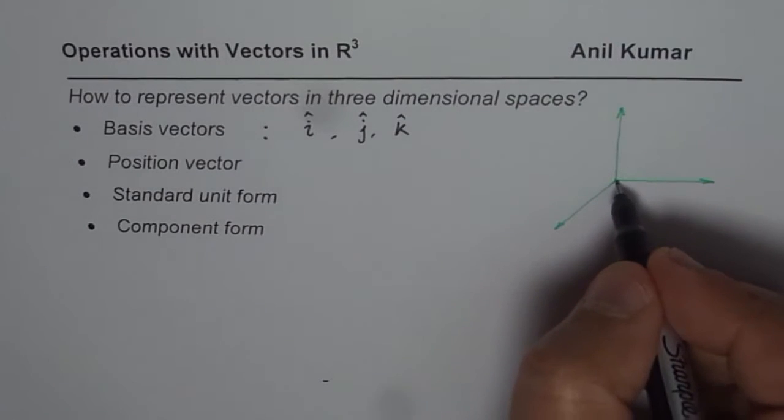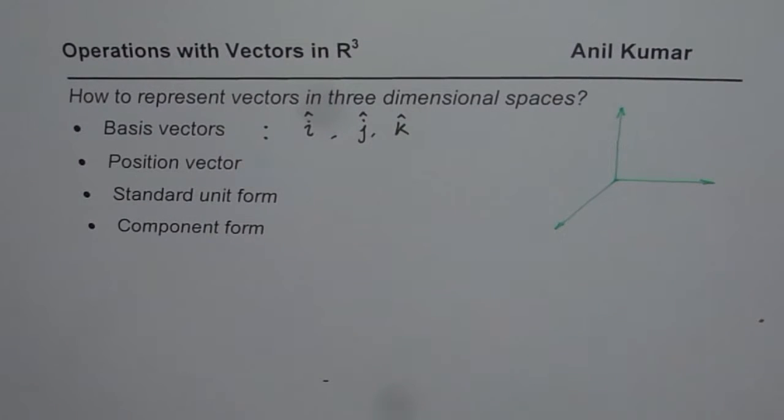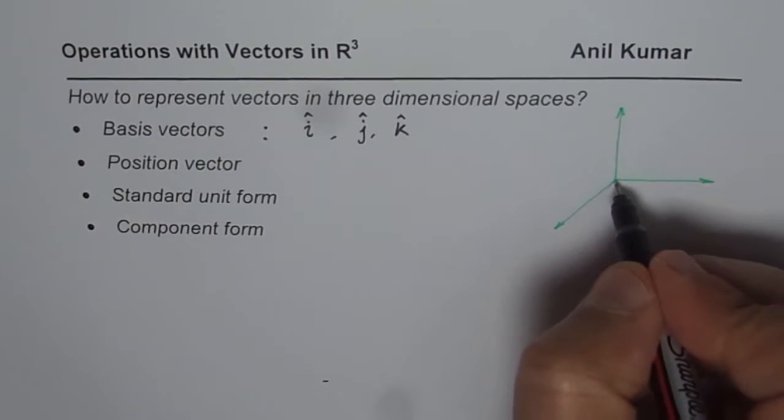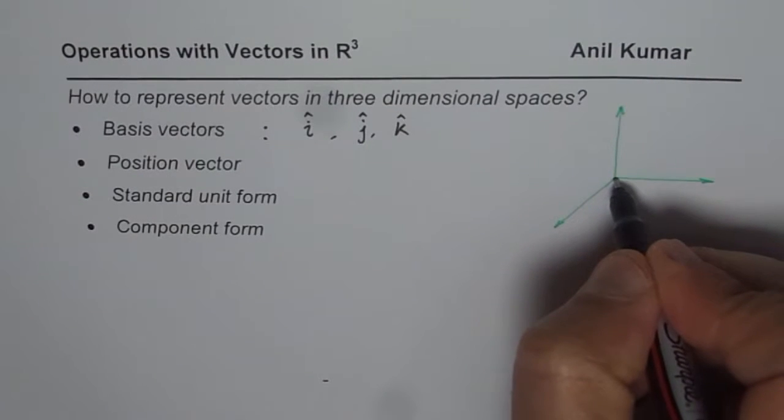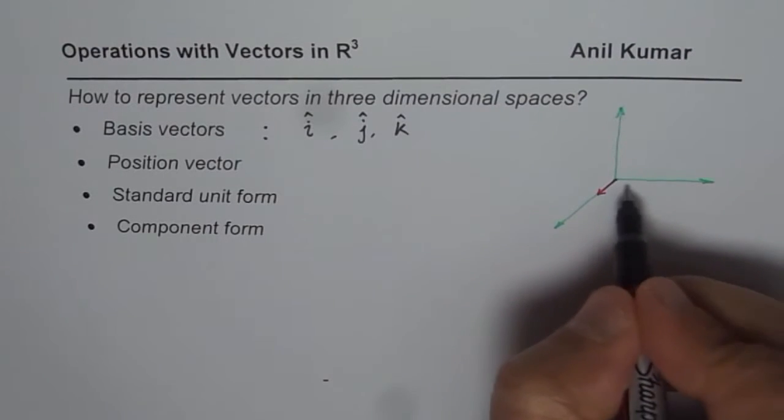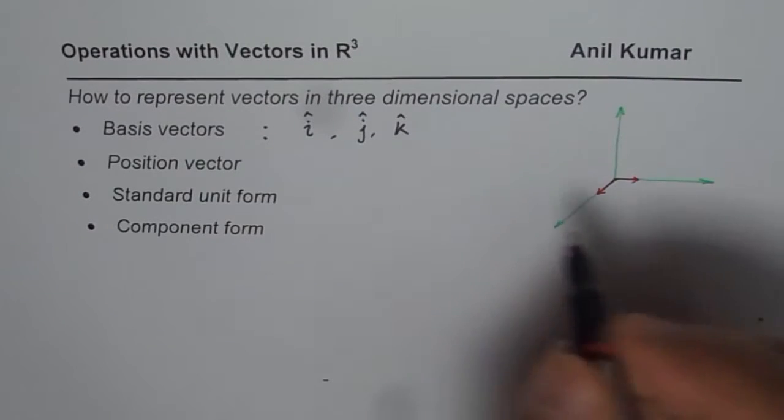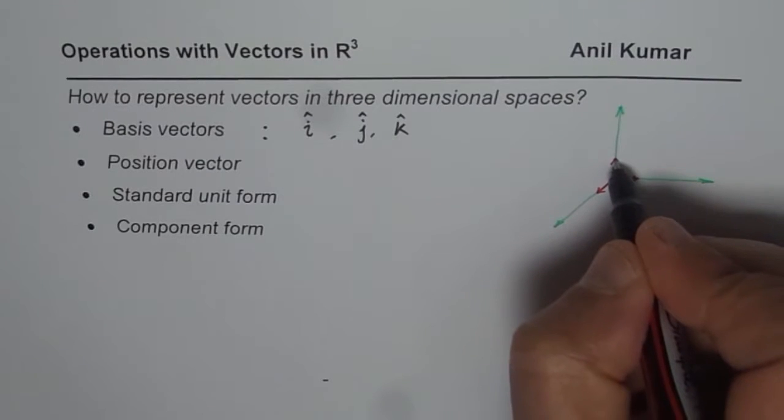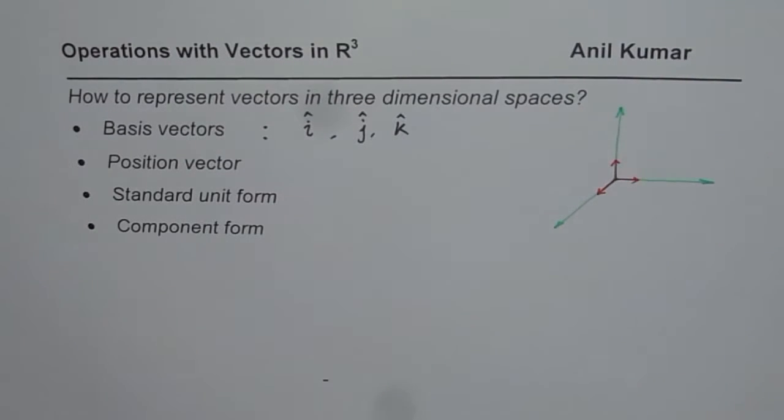This is our x-axis. Let me show you how to represent i, j, k. I is one unit along the x-direction, J is along y-axis, and vector K is along z-axis. These are of unit magnitude.